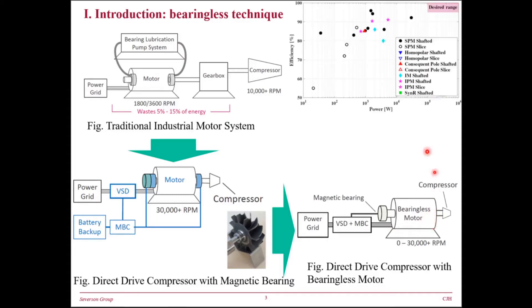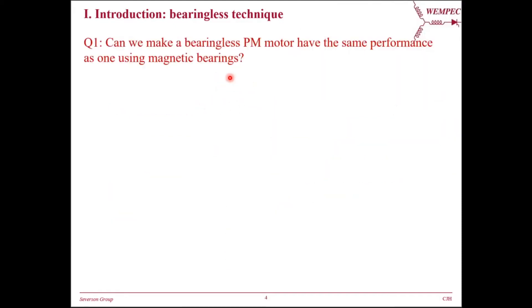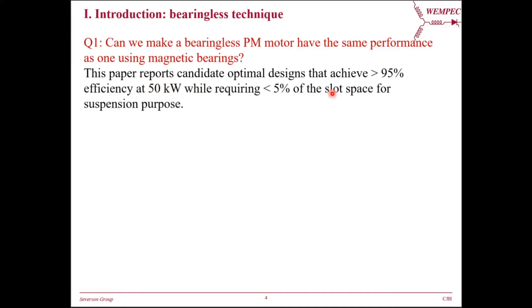Recall the literature review from last slide. We come to the first question that this paper tries to answer. Can we make a bearingless motor have the same performance as one using magnetic bearings? Along this question, I would like to summarize the two key contributions of this paper. We report candidate optimal designs that achieve over 95% efficiency while requiring less than 5% of slot space for suspension purpose. This means the bearingless motor can have close performance as one using magnetic bearings. The key technique here is the no-voltage combined state winding.